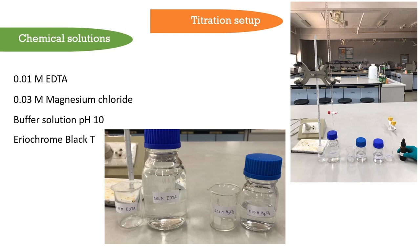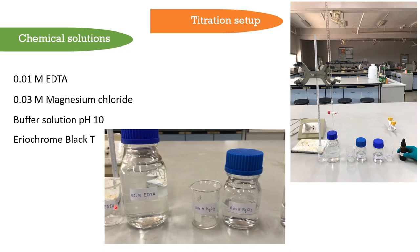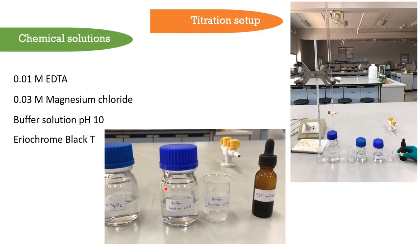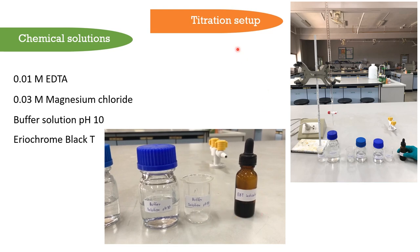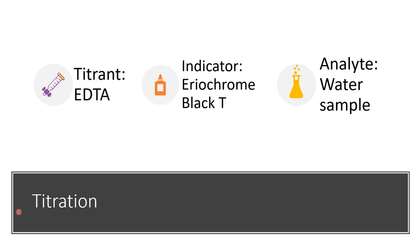The solutions needed for Part Two are: EDTA as your titrant, magnesium chloride, a buffer, and the indicator Eriochrome Black T. For the titration setup, you will need a burette and a stand, along with other glassware such as a flask and pipette. The main components for this method are the EDTA solution as the titrant and the water sample as the analyte, which contains calcium and magnesium ions.